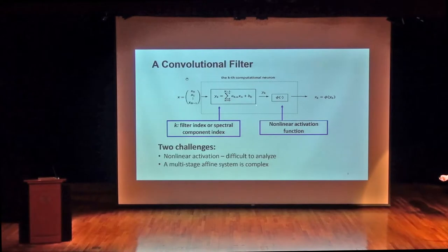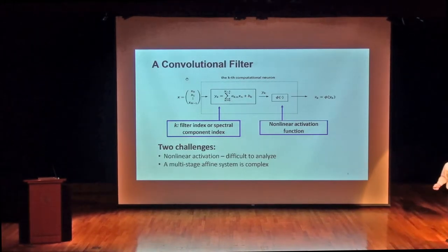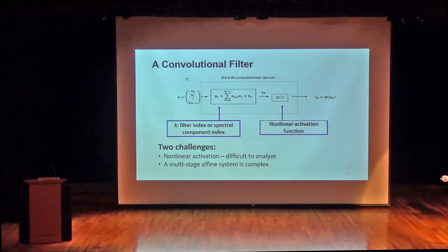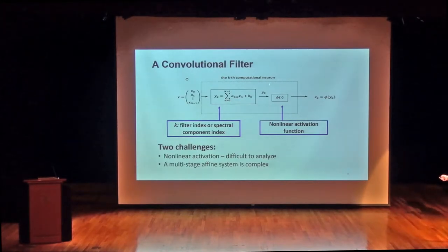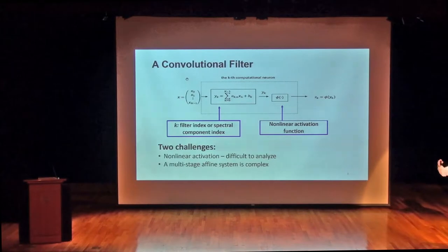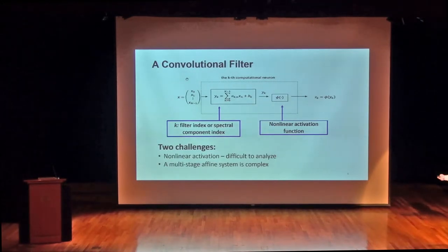In order to understand this, we have to understand the non-linear activation phi. But phi is very difficult to understand, so the best way is to try to avoid analyzing phi — get rid of it, but find a smarter way to do so. Also, I am very careful about choosing the bias B_K. I want to choose B_K so that it will not affect the next layer operation — make it extremely simple so the next layer will not give me trouble.